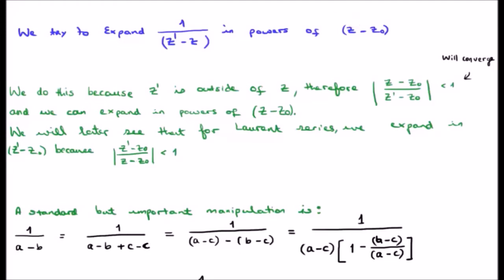We do this because Z' is outside of Z. Therefore, if we look at Z' minus Z0 divided by Z minus Z0, its magnitude will be less than 1, and such a power series will converge.